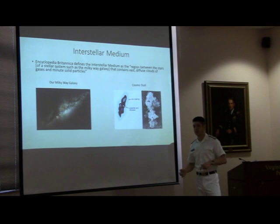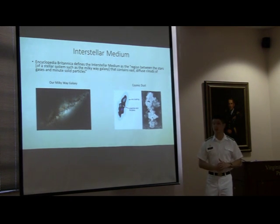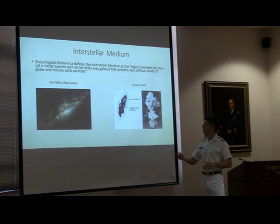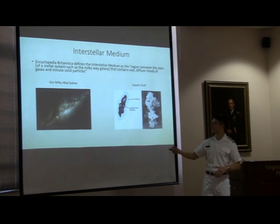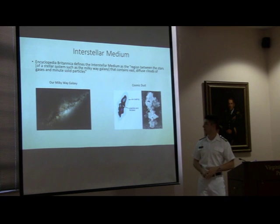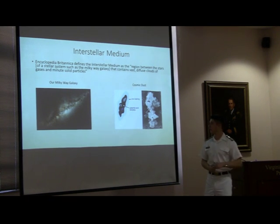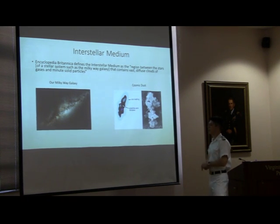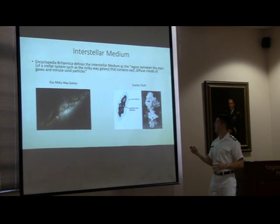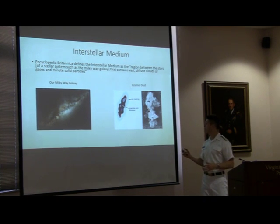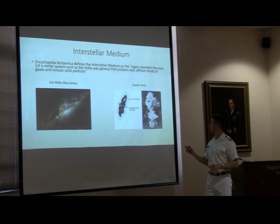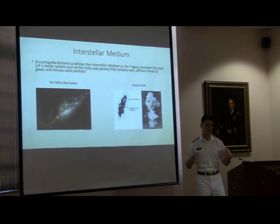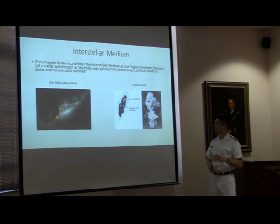What is the interstellar medium? It's essentially these clouds of gas and dust that are between us and other stars in our galaxy. Here's the Milky Way galaxy, for example, and you can see that there's dust extinguishing the light coming to us in that picture. And that's what we're looking at. They're 0.1 micrometer-sized dust particles with graphite inside and an ice coating. So that's kind of the makeup of these particles.